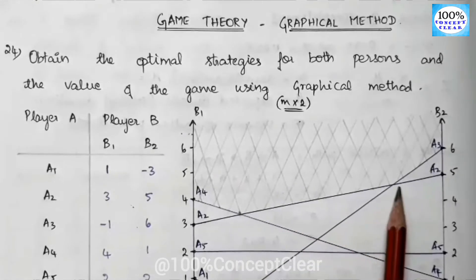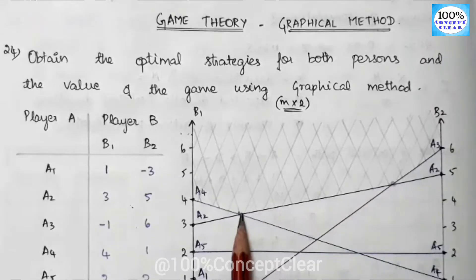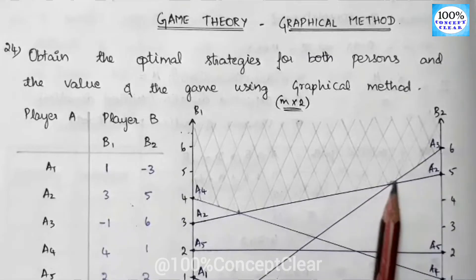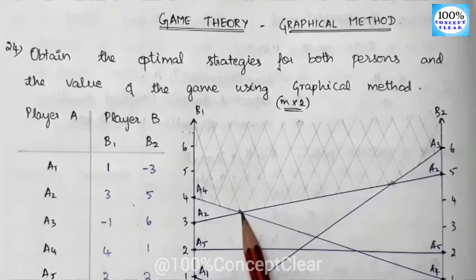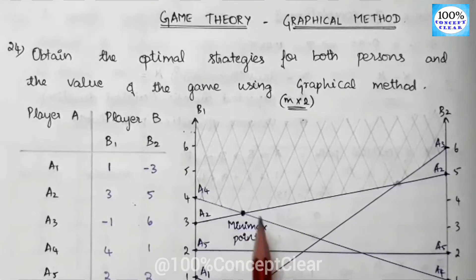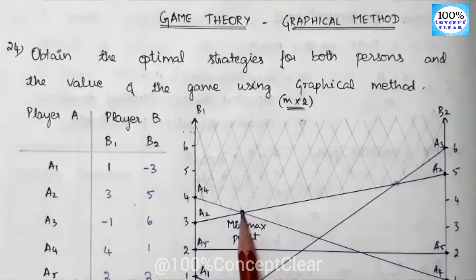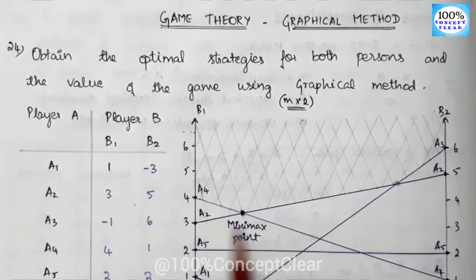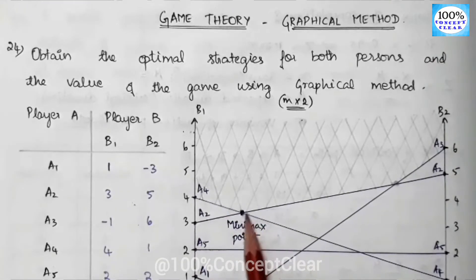This is the intersection point. Here we are going to choose the lowest intersection point — we compare and look downward. This lowest intersection point is called the minimax point. If we choose the minimax point, that gives us the intersecting strategies we will select. At this intersection point, the strategies are A2 and A4 — A2 and A4 form the minimax point.